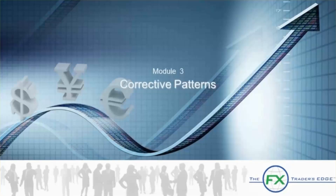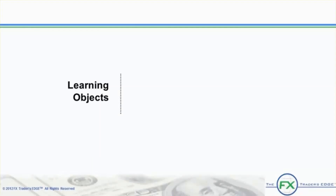Welcome to Module 3, Corrective Patterns. By now we have completed our first learning object of Module 3, Corrective Patterns, and learned about Corrective Wave Structure, Characteristics of Zig Zags, Flats, Triangles and Combinations, and Rules and Guidelines of Corrective Waves.